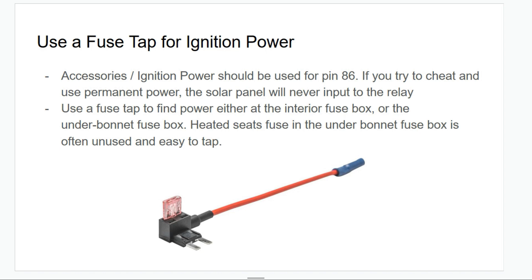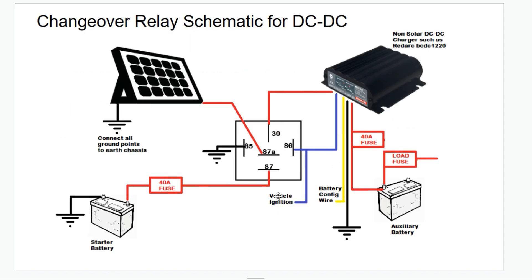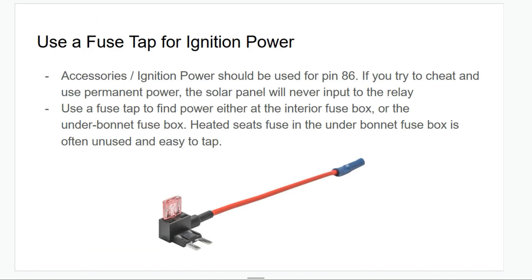If you're looking at the schematic, as all auto electricians know, the vehicle ignition wire is the most annoying wire because you have to find a power source from it that turns on when the key is on. Thankfully, if you've never heard of one, you can use a fuse tap for ignition power.